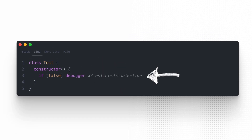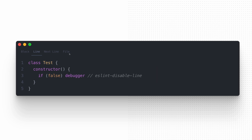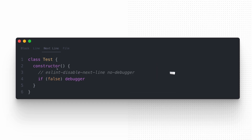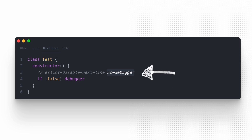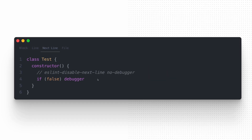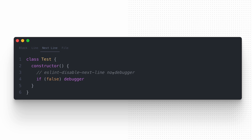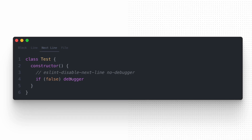You can also ignore a specific line from the check and you can ignore the next line. You can also specify the rule that should be skipped by defining it after the specific comment. For example, in this scenario the tool will check all rule violations without the no-debugger rule.